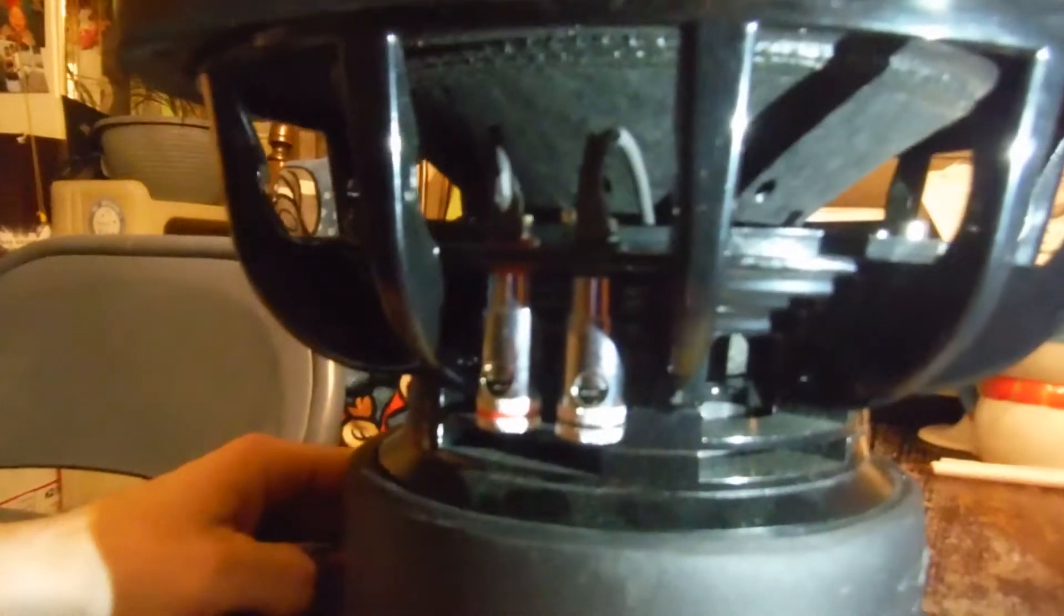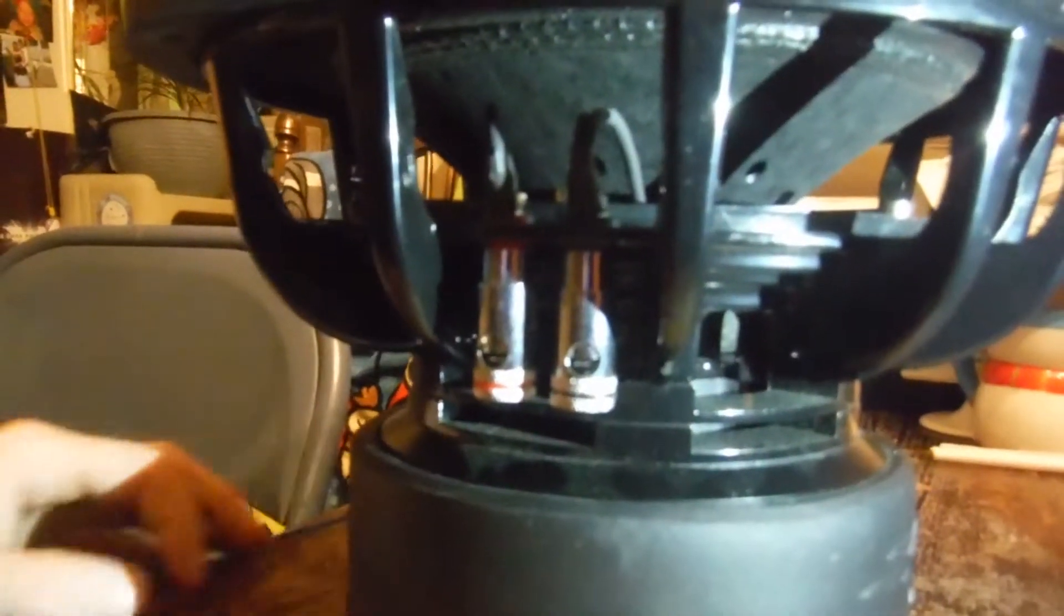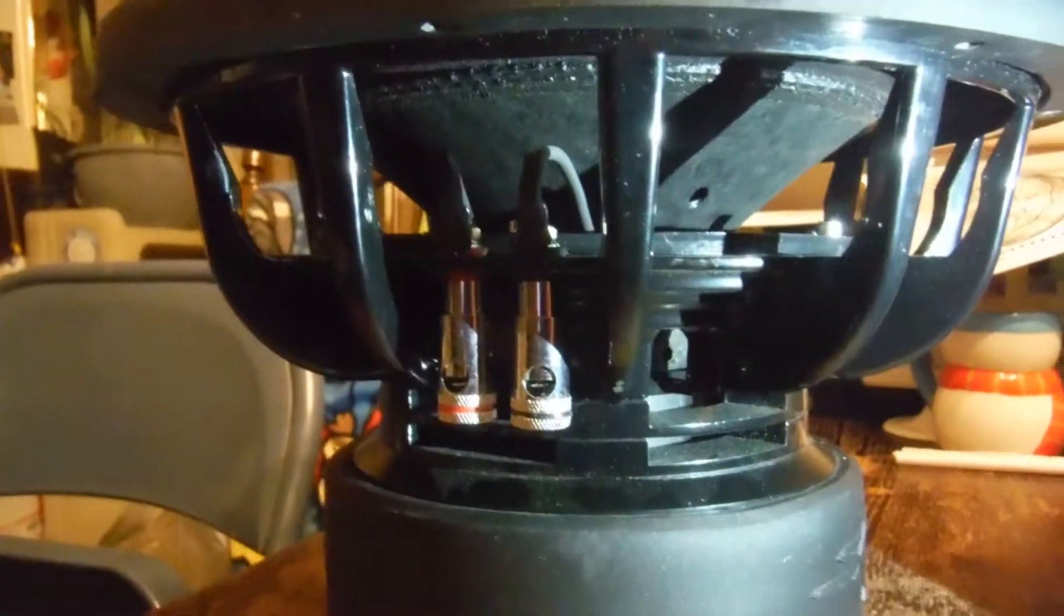Hi everybody, welcome back. Here we have a 4-ohm DVC subwoofer, a 4-ohm dual voice coil subwoofer. I'm going to show you how to wire this to 8 ohms and run it to your speaker box, and I'm going to show you how to wire it to 2 ohms and run it to your speaker box.